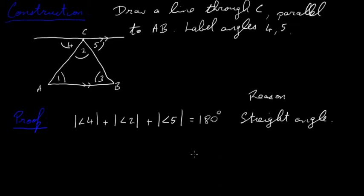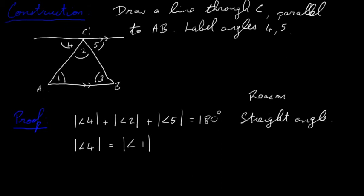Next, we say that angle 4 is equal to angle 1. The reason is that they are alternate angles — the line AB and the constructed line through C are parallel, and the transversal cuts through both of them, making angles 4 and 1 alternate angles.